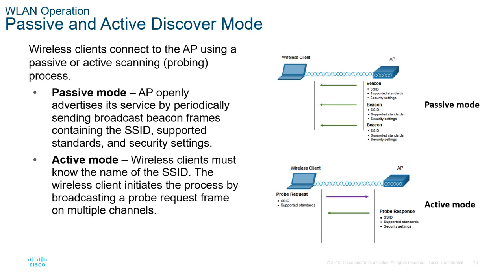Discovery can happen in two ways: passive or active mode. In passive mode, the wireless client waits while access points broadcast beacons with SSID, supported standards, and security settings. In active mode, the wireless client sends out known SSIDs and supported standards — called probing — hoping an AP responds. The risk with active mode is that a rogue or hacking device could modify its configuration to match the probe, creating security vulnerabilities.